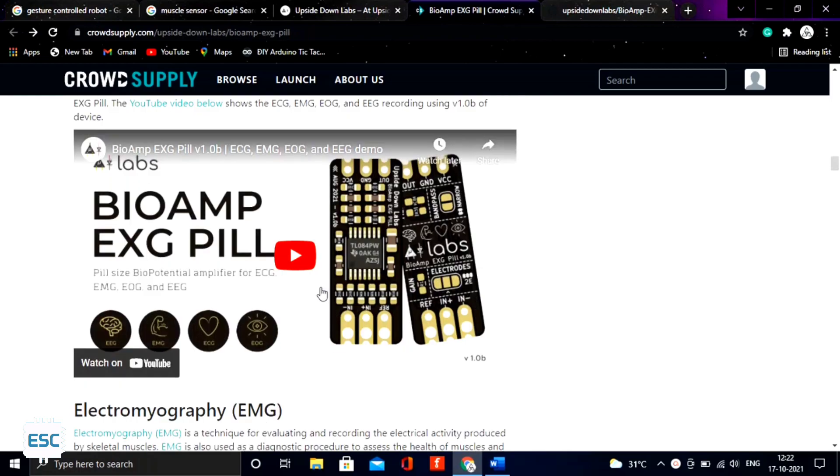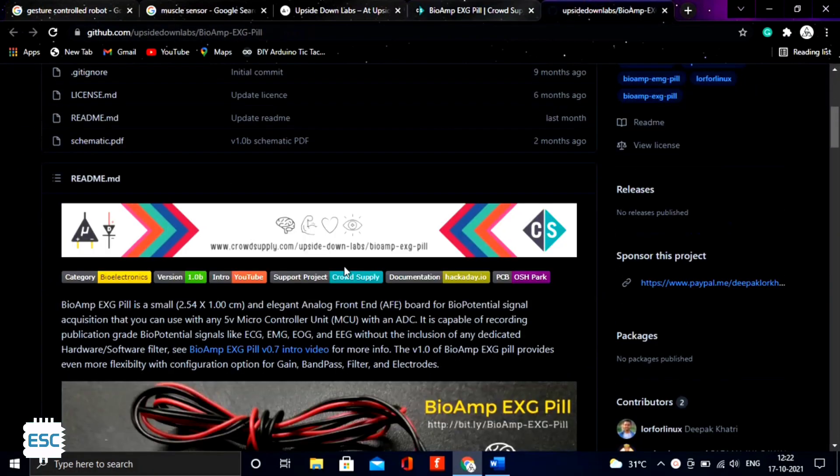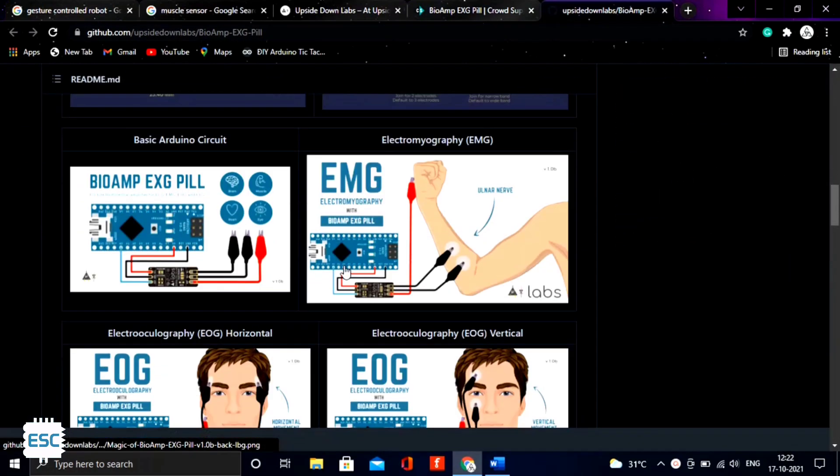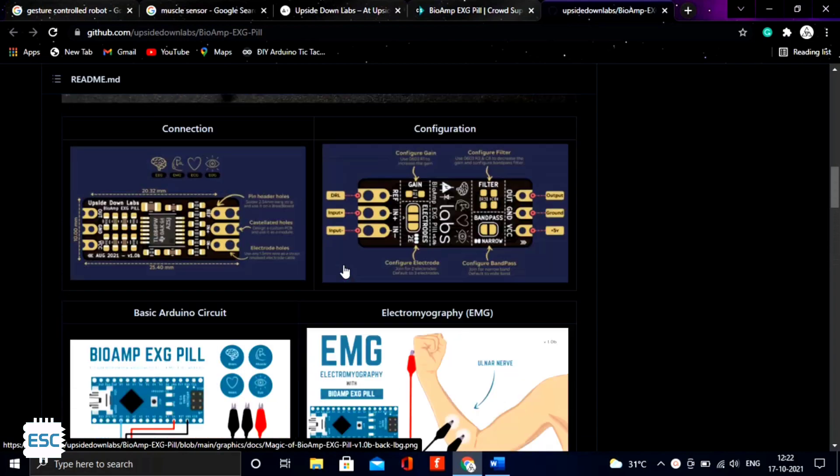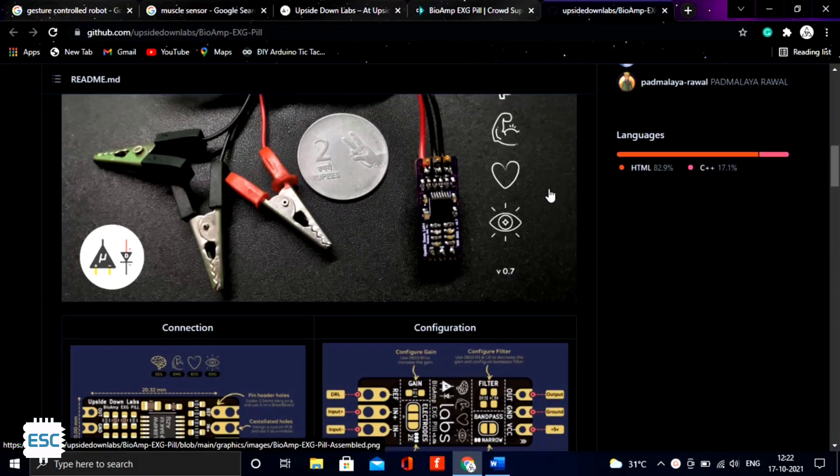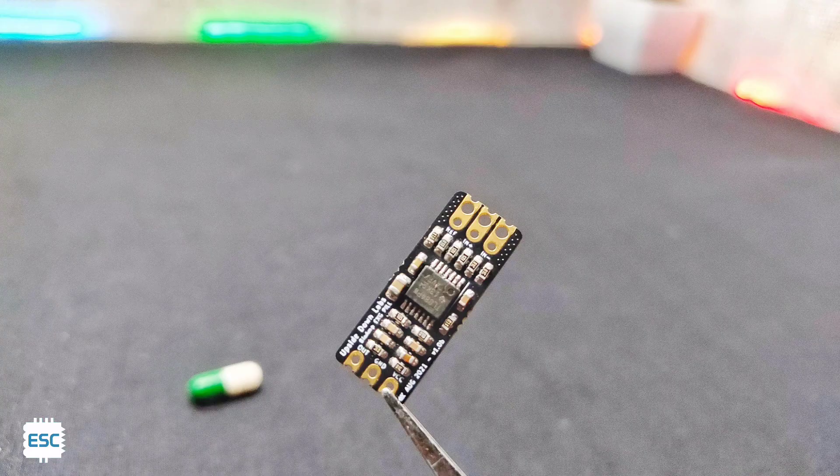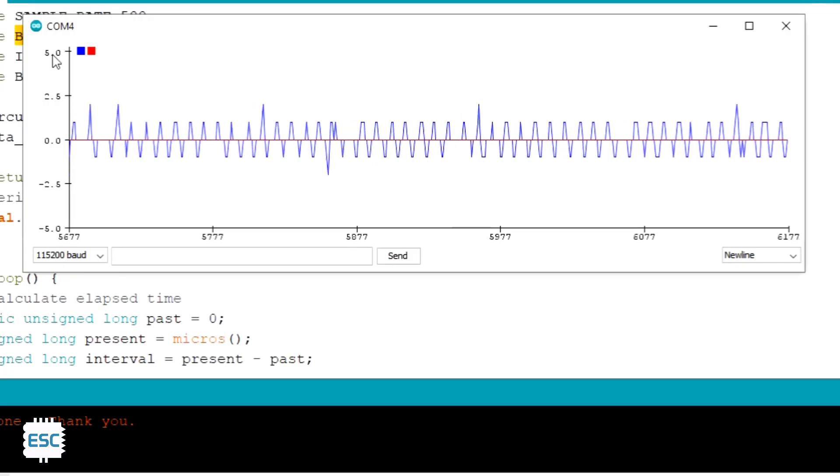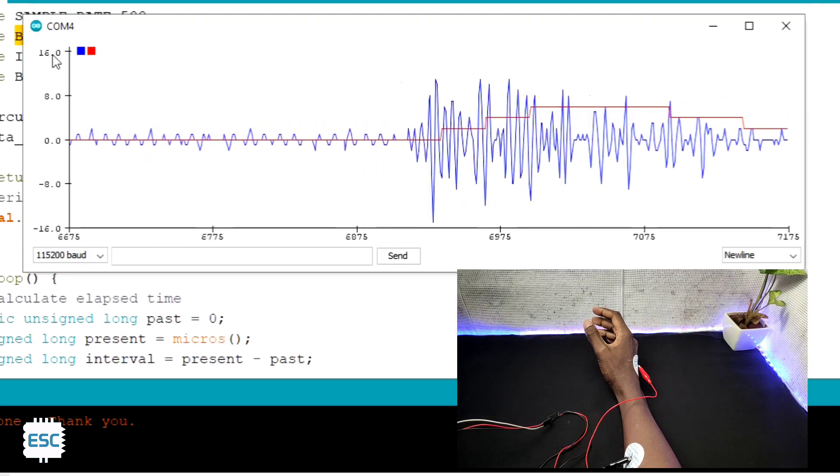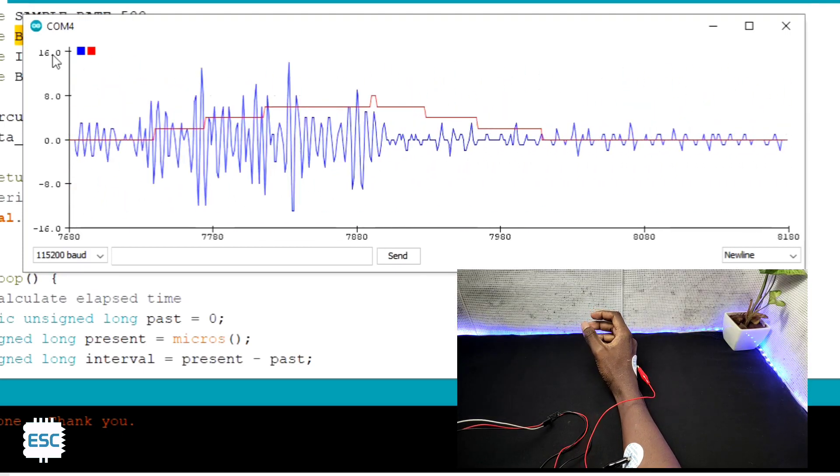The EXG Pill is a biopotential amplifier. This tiny board not only records muscle activity but can also measure EEG, EOG, and ECG. I think this is why they gave it the name EXG Pill. In this video, I'm going to show you how to interface the EXG Pill with Arduino and how to read EMG. So let's start.